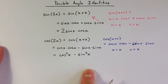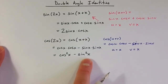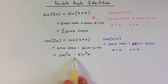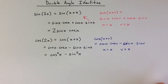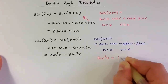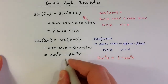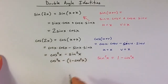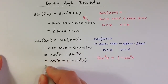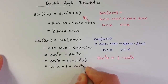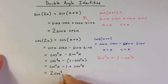The double angle identity for cosine is flexible, because cosine squared x and sine squared x remind us of the Pythagorean identity. This is not the same as the Pythagorean identity — it's not equal to 1 because we have a minus sign instead of a plus sign. But we can use the Pythagorean identity to substitute: sine squared x equals 1 minus cosine squared x. Replacing sine squared gives an alternate form. Distributing the minus sign, we get cosine squared x minus 1 plus cosine squared x, which is 2 cosine squared x minus 1.